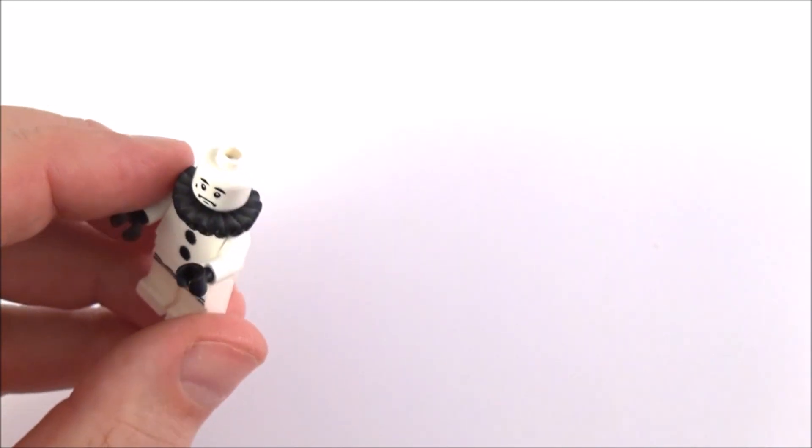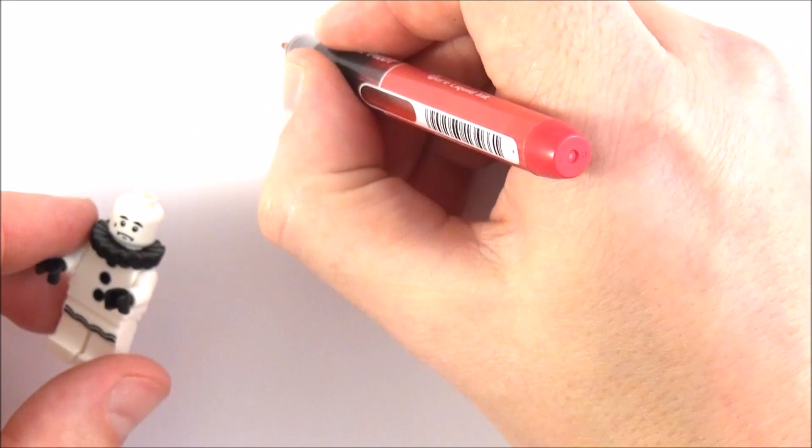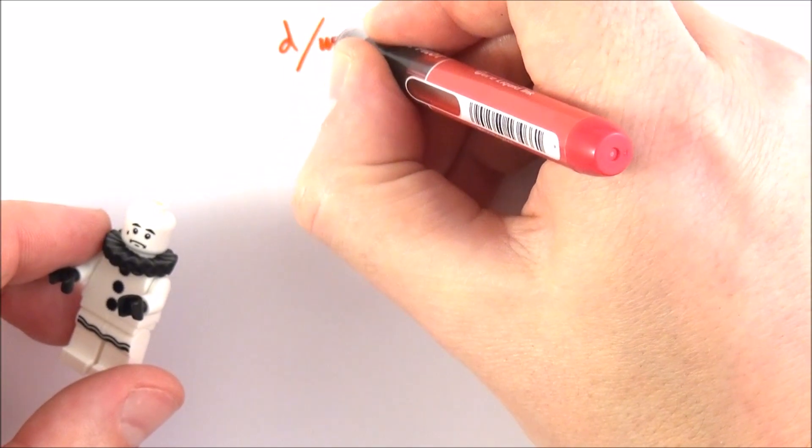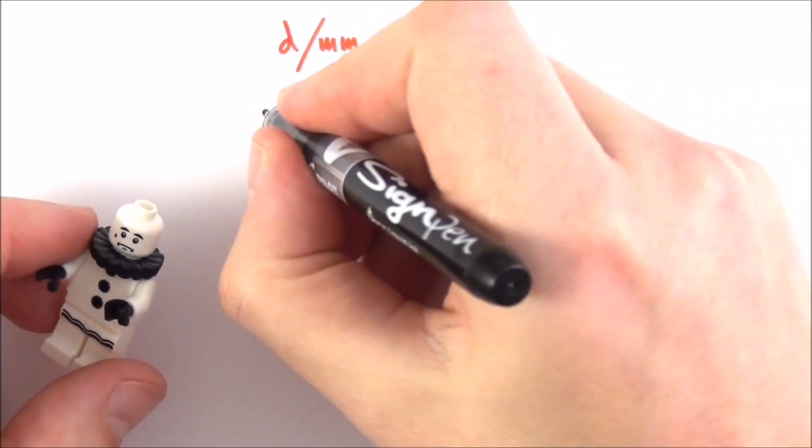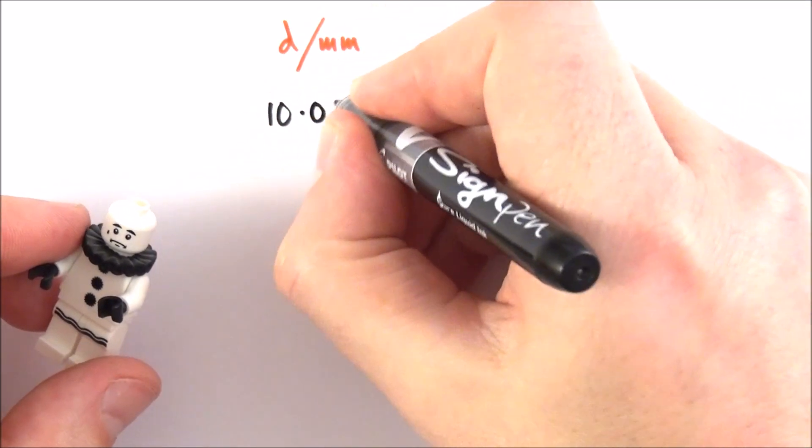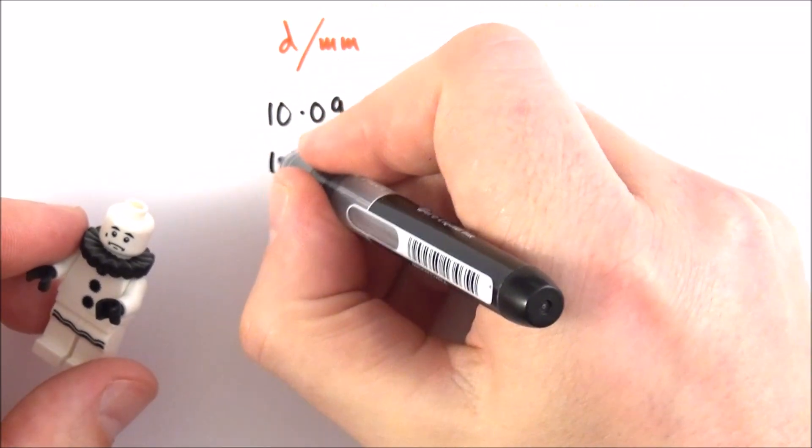So perhaps I look at the diameter, which I'm going to measure in millimeters, and what I do is I take various values. So my first one was 10.09, I then repeat it many other times, so I might get 10.12, 10.07.